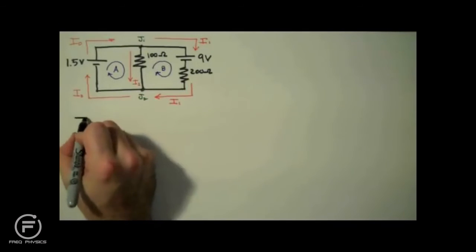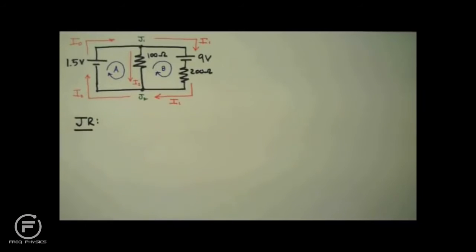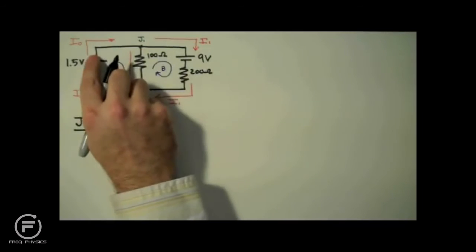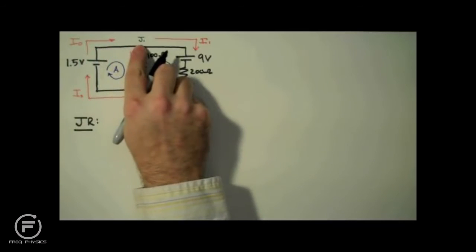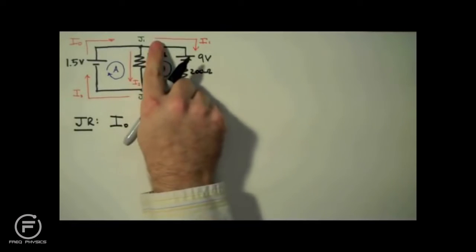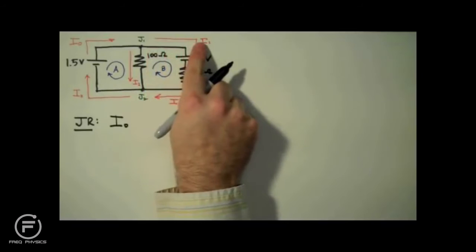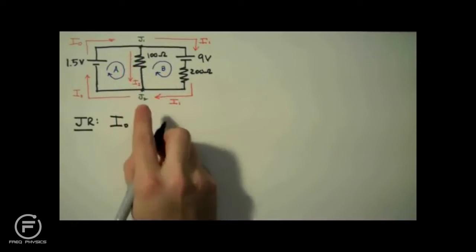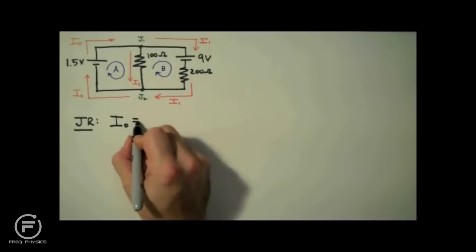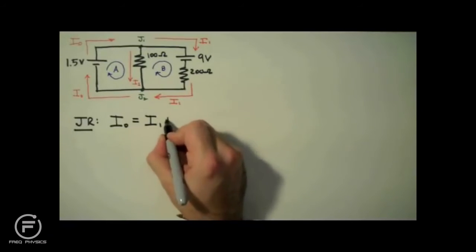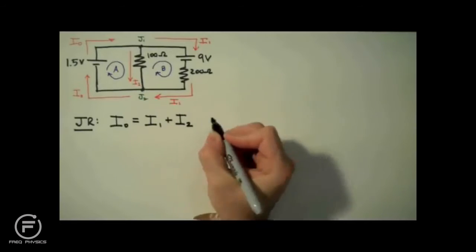Now that we've labeled our circuit, we're going to apply the junction rule. The junction rule states that the sum of the currents into a junction is equal to the sum of the currents out of a junction. So we're going to apply this to junction 1. The current in is just I0, so on the left-hand side of the equation I write I0. The currents coming out of that junction are I1 and I2, so on the right side we'll have I1 plus I2. This junction rule, by the way, is just a consequence of the conservation of charge.